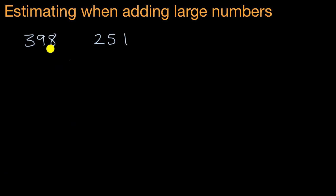Well, there's a few ways we could do that. We could just add 398 to 251 and figure out what that is equal to. But let's say that we don't have a lot of time and we don't have paper and we want to do it in our heads. And we don't care about the exact number. We want to know roughly how many eggs do we have.